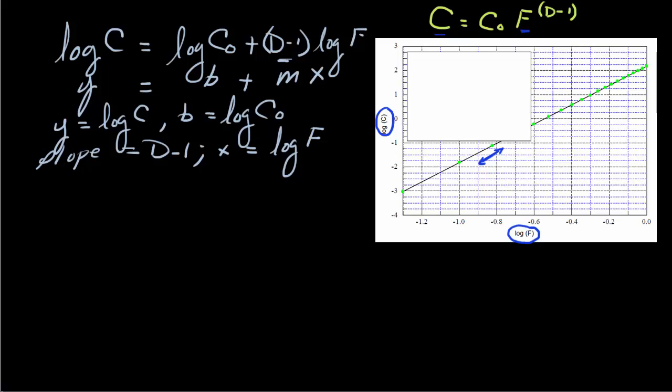Now what is the intercept? By definition, the intercept is the value of the dependent variable at a point where the independent variable, in this case, our log of F is equal to zero. So this would be our intercept. Everybody fairly sure about that? This is our intercept over here.